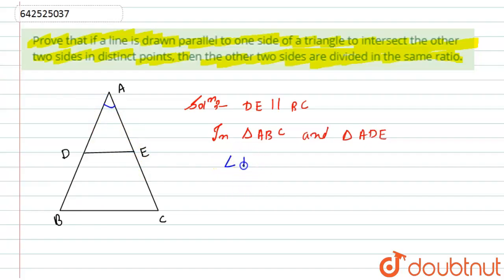So from here I can say that angle BAC is equal to angle DAE because of the common angle in both of them.